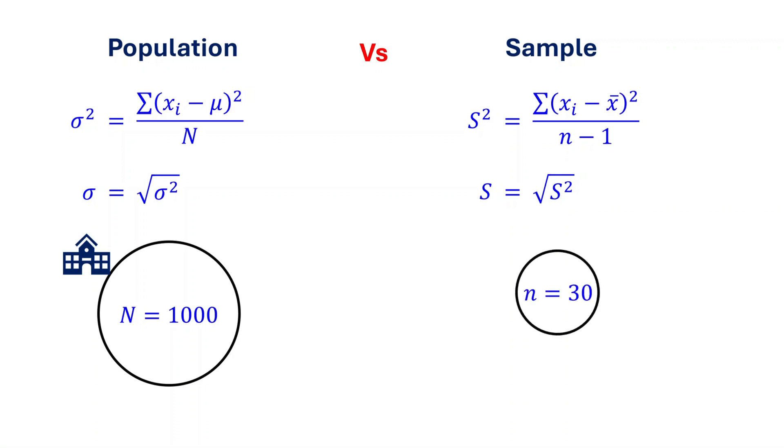Instead, you could randomly pick 30 students and measure their heights. In this case, you are working with a sample. And the cool thing is, you can use this sample to estimate the variance and standard deviation of heights for the entire school.